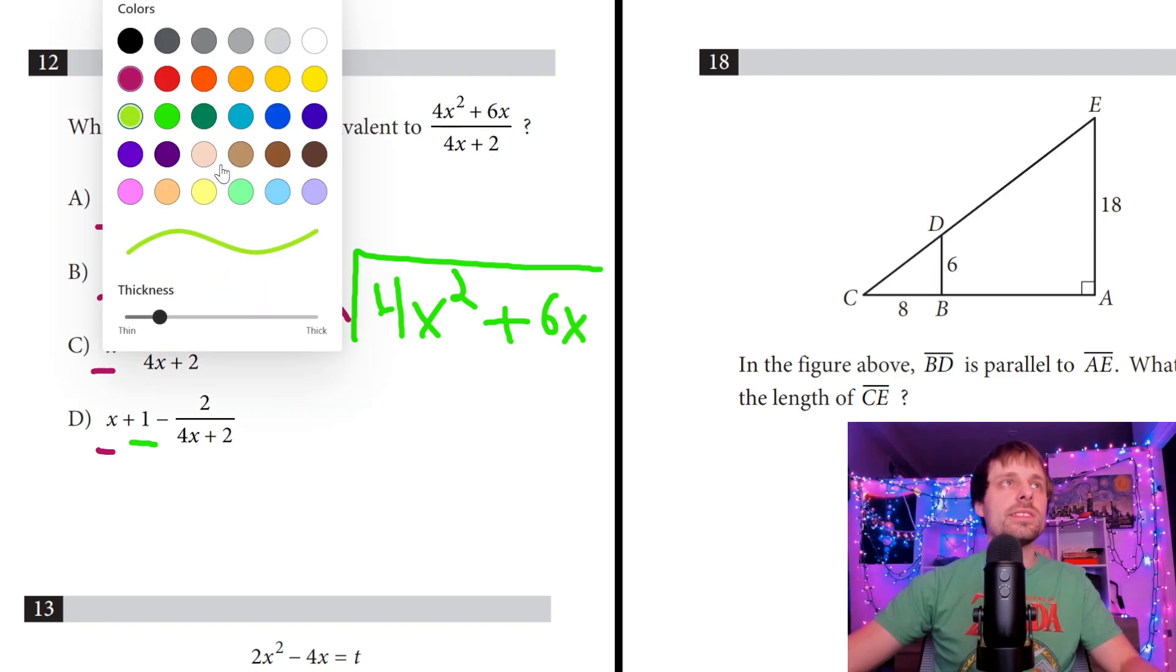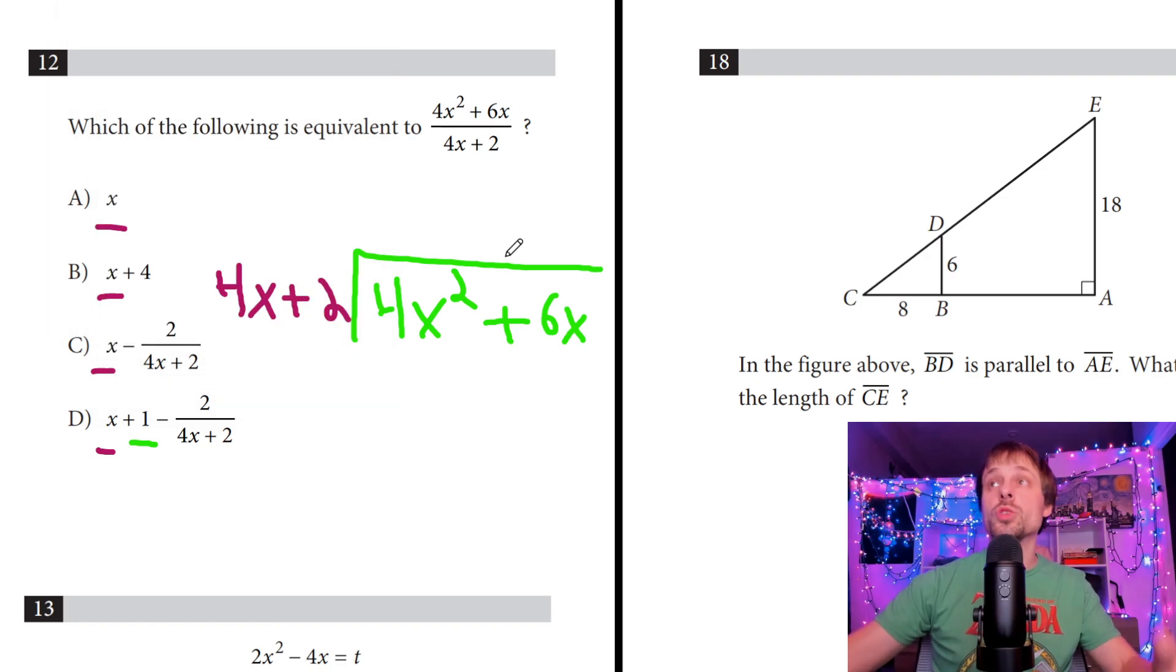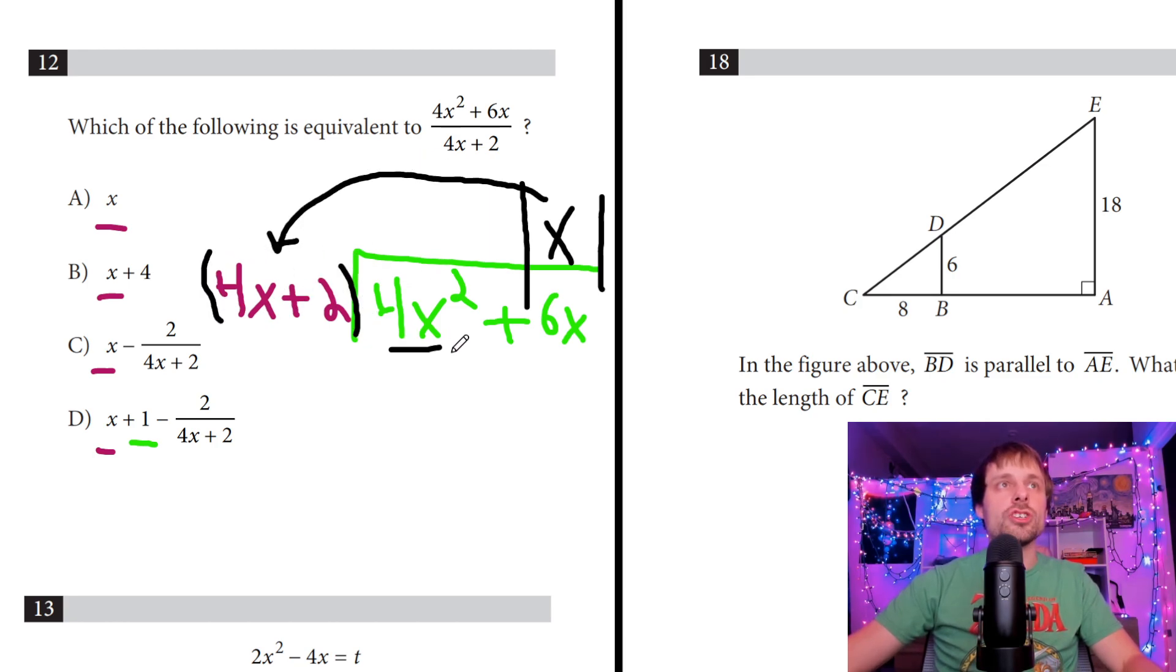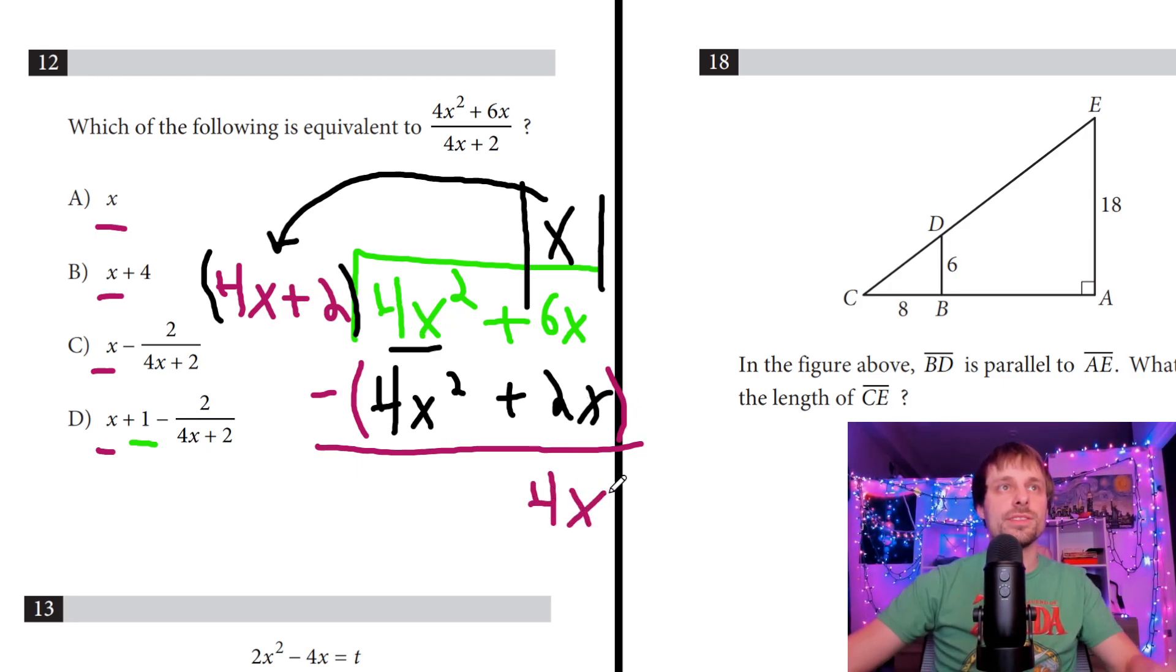What that looks like is normal long division. We'll set it up just like normal where I throw my numerator in here, 4x² + 6x. And then I throw my denominator out here. And same as always, I start with what is something that's going to cancel out my biggest term here. So I already have four. If I multiply this by x, I should get 4x² + 2x. And then don't forget to distribute your negative when you subtract and we should get those cancel out. And I should get 4x here because 6x minus 2x.